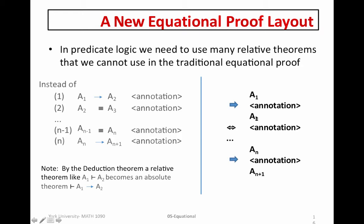Now, why is this really that powerful? How can we use the relative theorems? Recall by the deduction theorem, a relative theorem like A1 proves A2 becomes an absolute theorem in terms of A1 implies A2. So that means that in this particular step, if A1 is a hypothesis of a relative theorem, with A1 we can use a one-directional arrow to conclude A2.